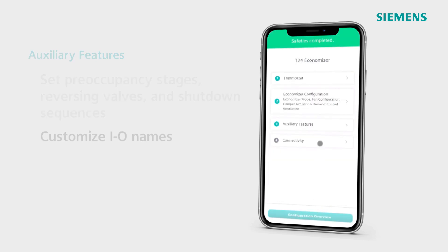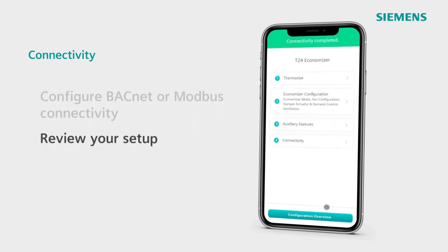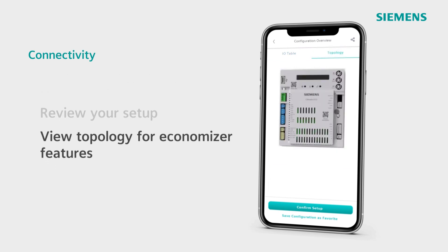Lastly, select connectivity to adjust your Economizer's connection type, either on BACnet or Modbus. Once you're finished, you can view a configuration overview of all your auxiliary points. Then, from a topology perspective, you can view all of the points located within the Economizer and find them labeled accordingly.